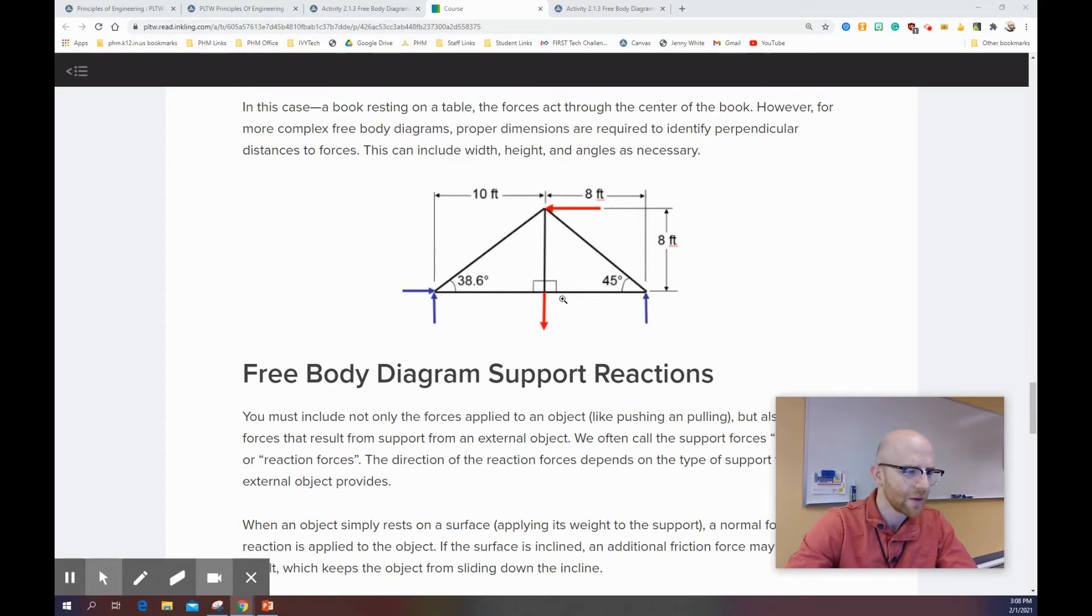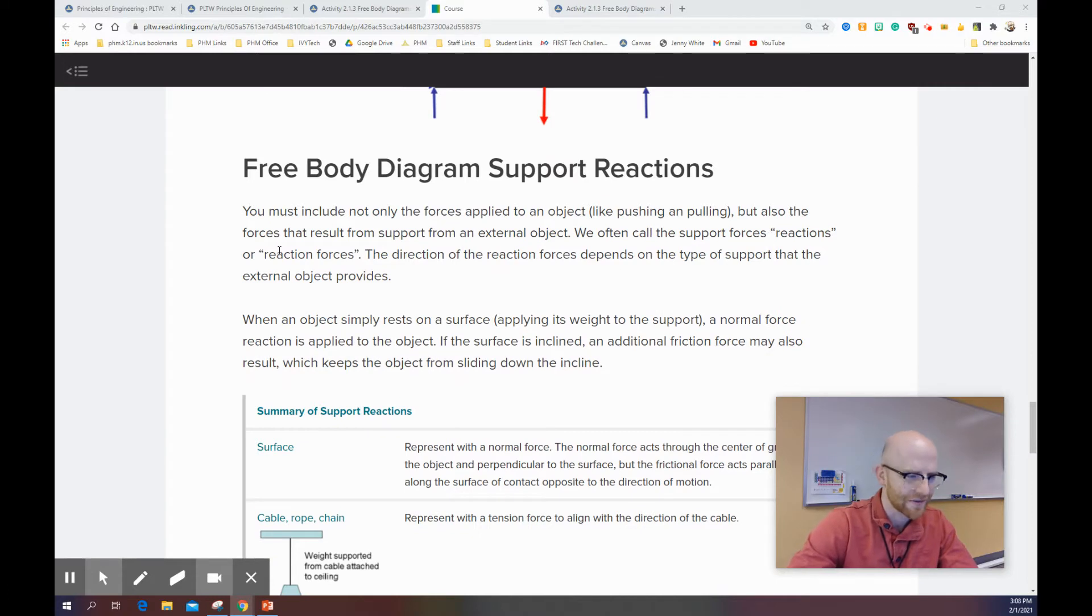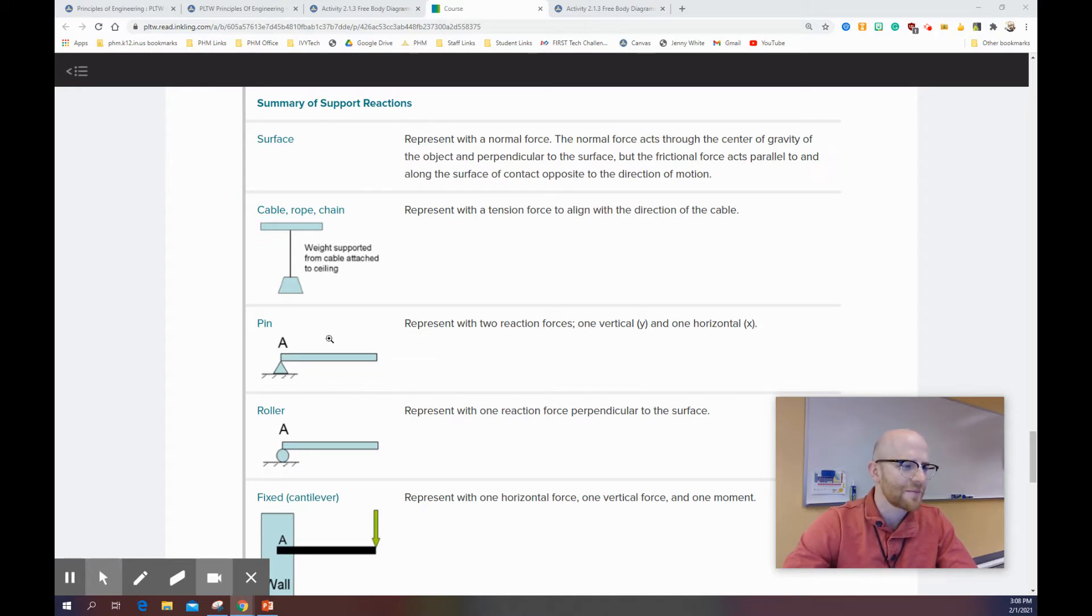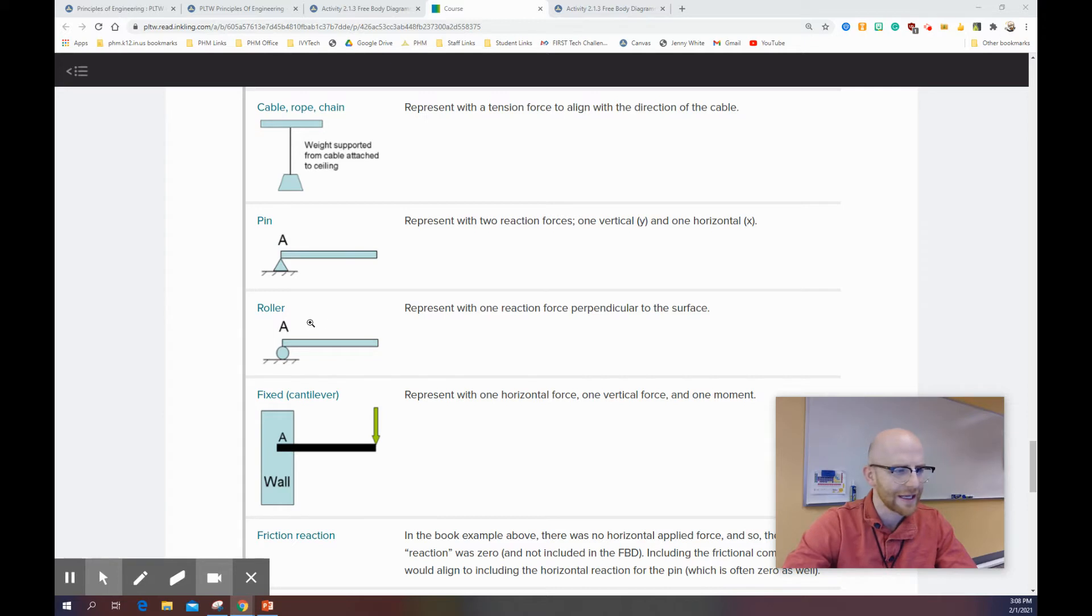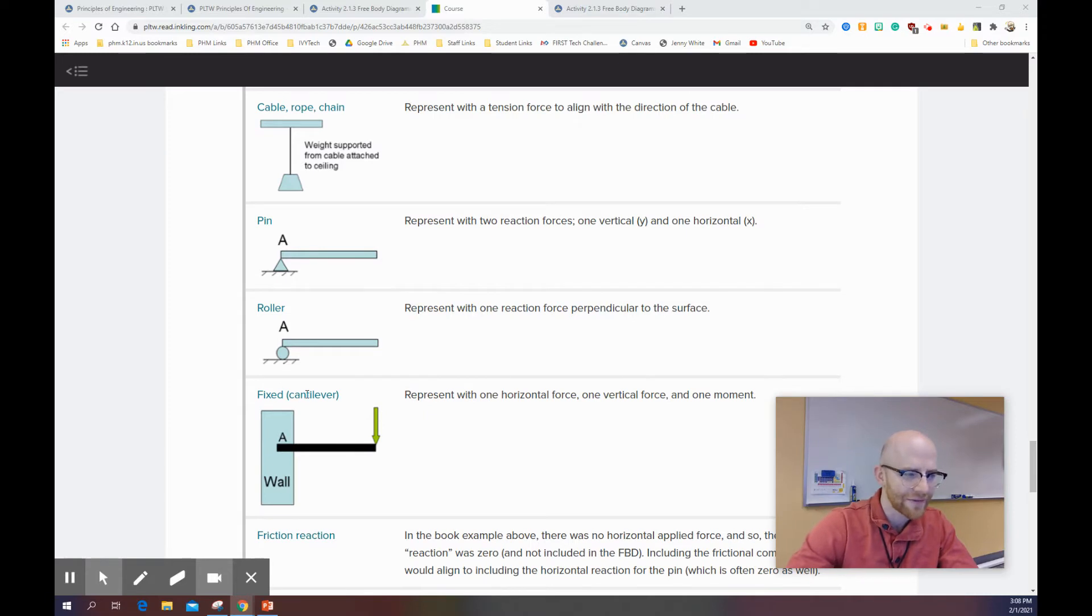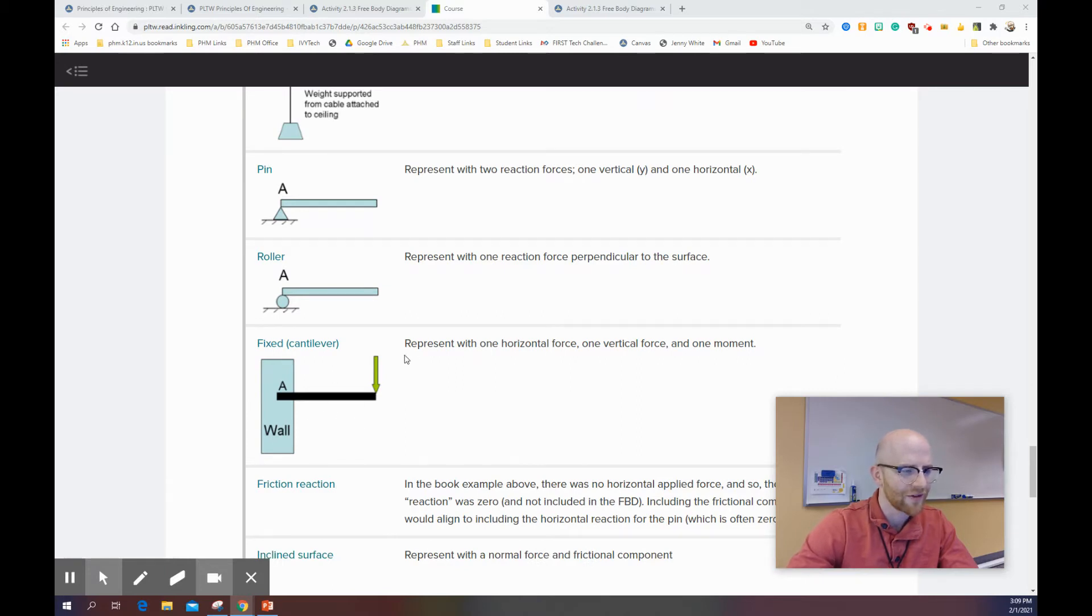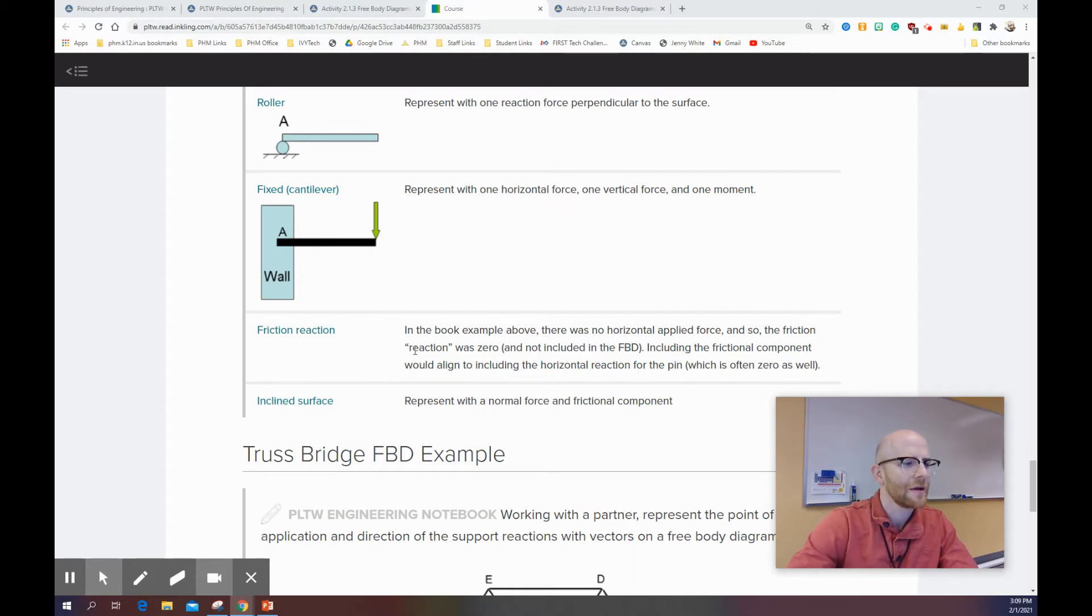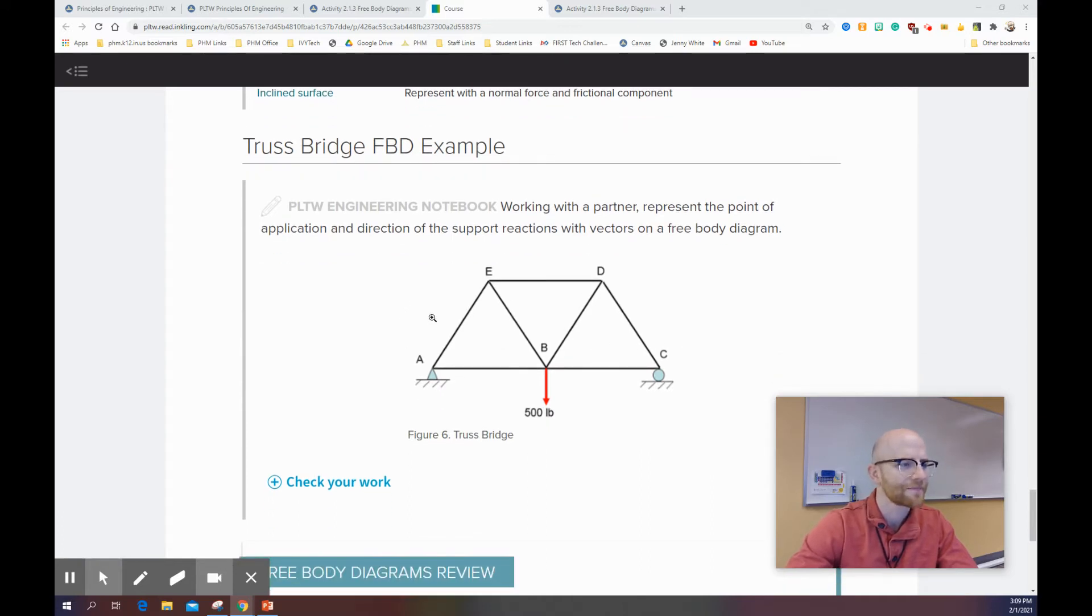And then there's also a truss system here that has a free body diagram as well. We haven't covered this part. This is the new part. So free body diagrams support reactions. You can look at this and try to understand that the most common one we use is a pin on one side and a roller on the other. So probably pin at A and a roller at B most likely. But there's cables, there's other surfaces, there's a cantilever. I call this cantilever or fixed. I normally say cantilever.